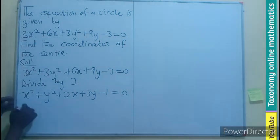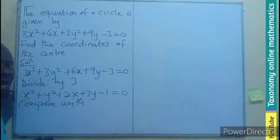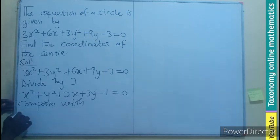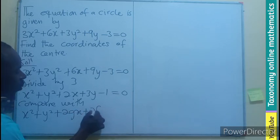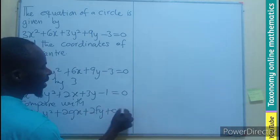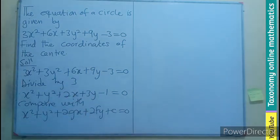Now that you make the coefficient of the variables unit, we can compare with the general formula or equation, which is x² + y² + 2gx + 2fy + c = 0. So you can see they are the same equations. So for me to be able to find the variables: